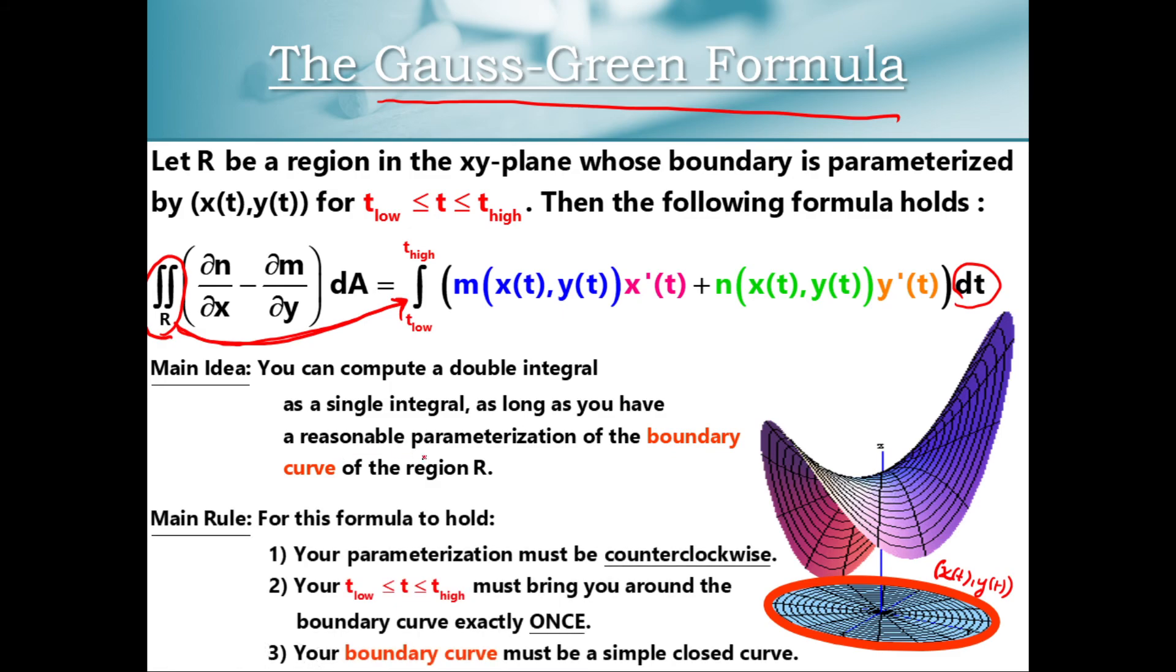Now, when do we want to use the Gauss-Green formula? It's specifically when our region on the xy plane has a boundary curve that's easy to parameterize. So look at the picture that's on the screen here. I've got a surface that's floating over the xy plane. And I want to compute a double integral over, it looks like a circular region here, right? This looks like a disk. Well, what's special about this curve is that this boundary curve can be parameterized. I can write an x(t), y(t) that traverses the boundary of this region. And that's specifically what the Gauss-Green formula is going to be useful for in this chapter.